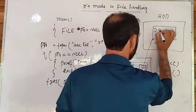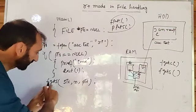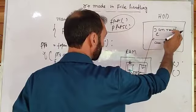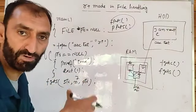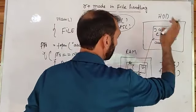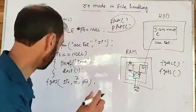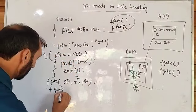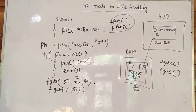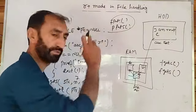For example, if the file contains 'I am reading C', by using fgets we can read those characters — we specify the number of characters we want to read at a time. If we want to read a single character at a time, we can use fgetc and pass PTR. So we can use these functions to read the contents from the file in R plus mode.